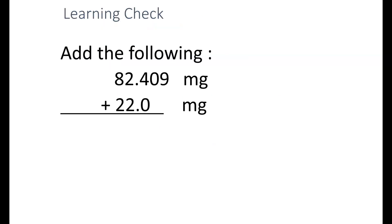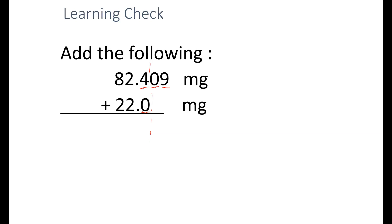In this example, 82.409 milligrams plus 22.0 milligrams. The first value has tenths, hundredths, and thousandths. The second one goes to the tenths. Our final answer is going to have to be rounded to the tenths place. Our answer becomes 104.4 milligrams.